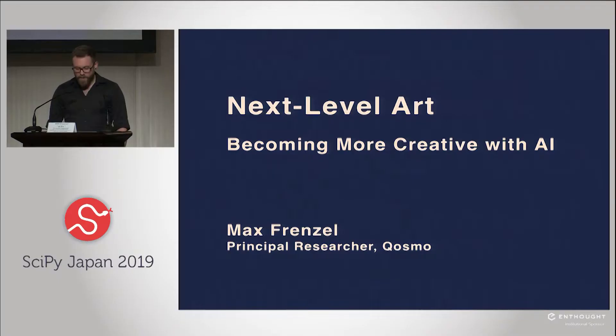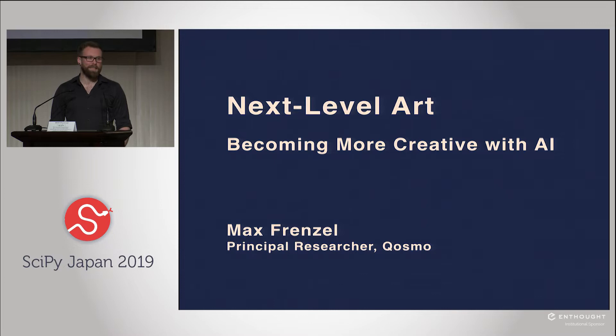Thanks everyone for being here. Given that we're at SciPy Japan, I probably don't have to tell you that in recent years we've had huge advances in all sorts of different fields thanks to machine learning, deep learning, and AI. We've heard amazing examples from science, but also many other fields. What might be surprising is that even within the arts and creative fields, deep learning and AI has had a big influence. Today I don't want a very technical talk — no differential equations — instead I want to show examples where people have used deep learning, machine learning, and Python for artistic and creative effects.